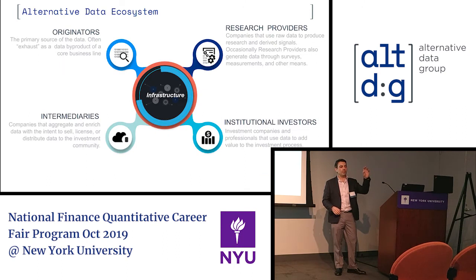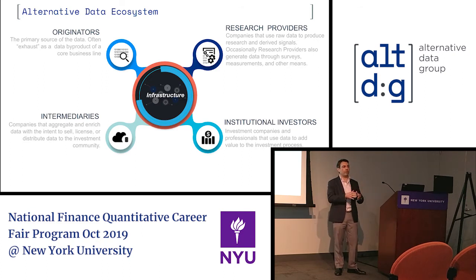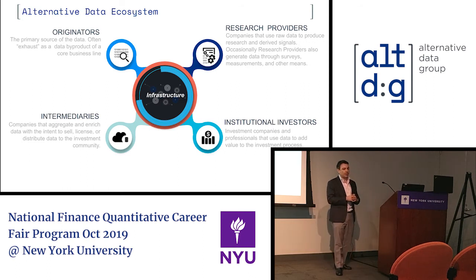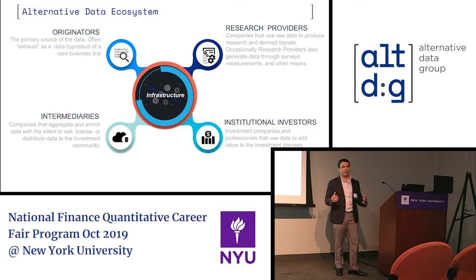It's really important to understand that most of the alternative data being offered for sale is not being offered by their originator — it's being offered by an intermediary. The reason it's important is because any time you put more and more levers into the final product and you don't know who's controlling those levers or how, the risk goes up and the accuracy goes down.